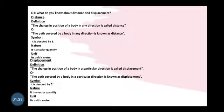If a body changes its position in a definite direction — that is, in a particular direction — a body covers the path by itself in a definite direction, then it is known as displacement. It is denoted by S, and since it is a vector quantity, you will place an arrowhead above it. Its unit is also meter.